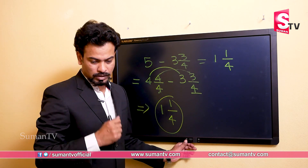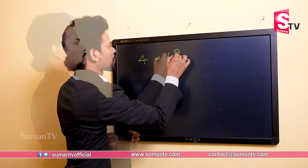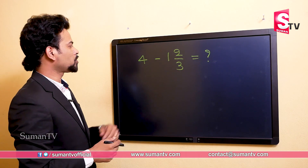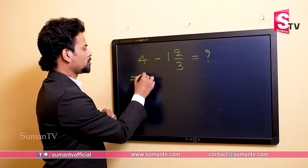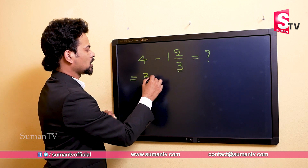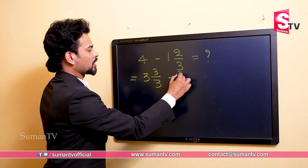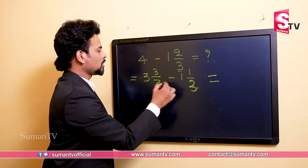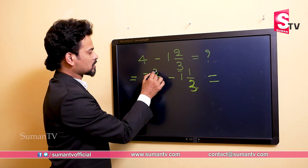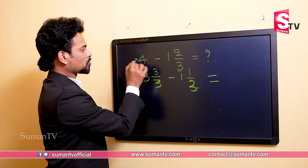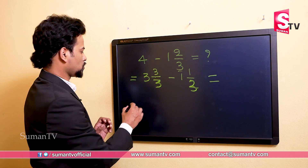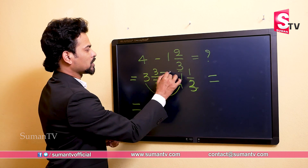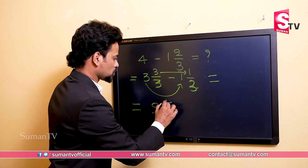Let's try one more example: four minus one and one by three. This is the same kind of question. We divide the whole number: because the denominator is three, we write three by three — so three plus one gives four — minus one by three. We subtract: three minus one is two, and three minus one is two, so the answer is two and two by three.